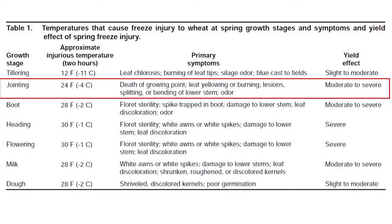It suggests that at jointing stage, the approximate injurious temperature for two hours is 24 Fahrenheit. It says death of the growing point, leaf yellowing or burning, lesions, splitting or bending of lower stems, odor, and yield effect moderate to severe.